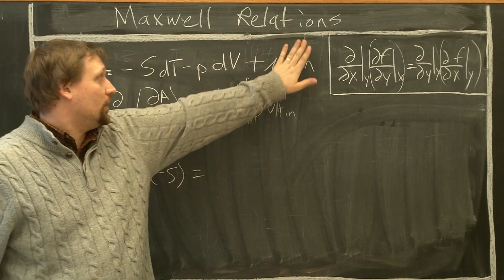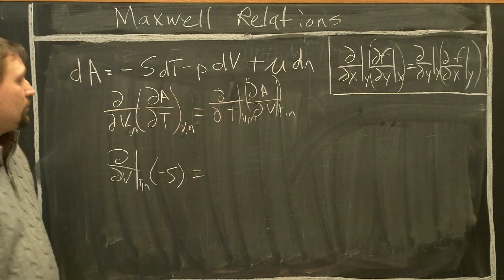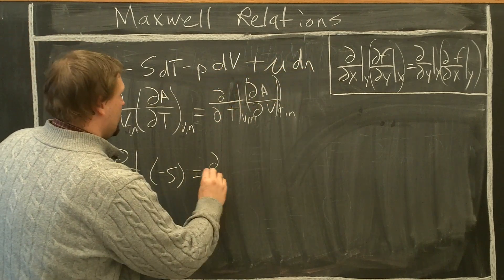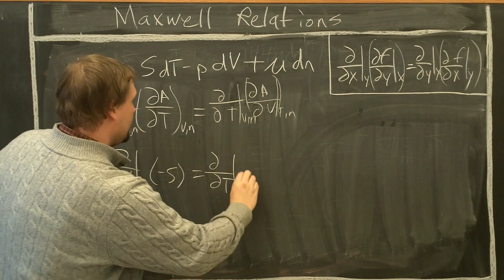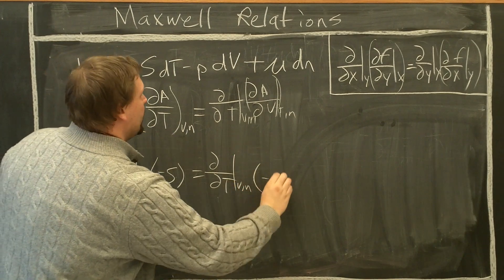T is gone, N is gone, partial with respect to V gives you minus P. Partial with respect to T at constant V, N of minus P.